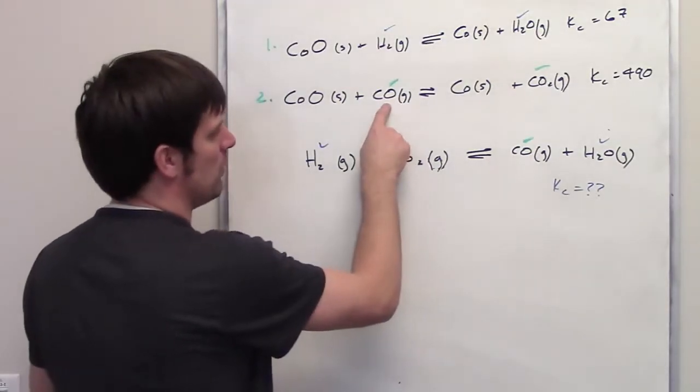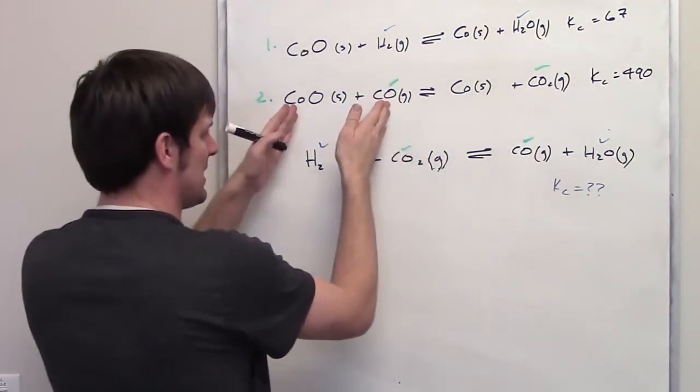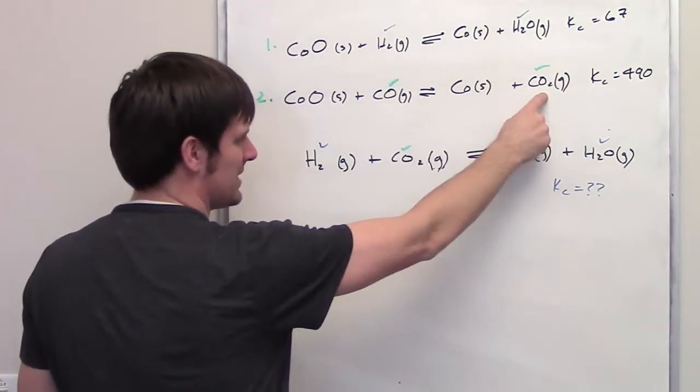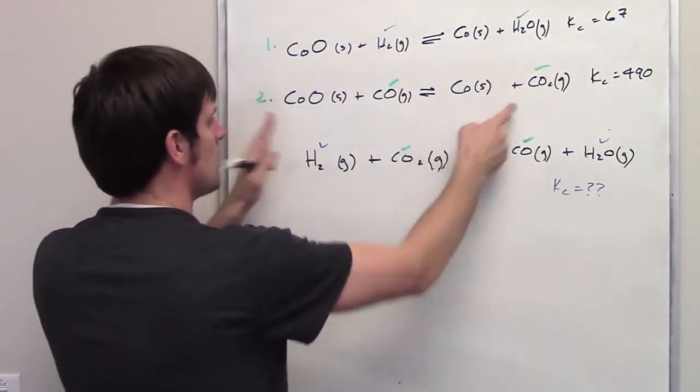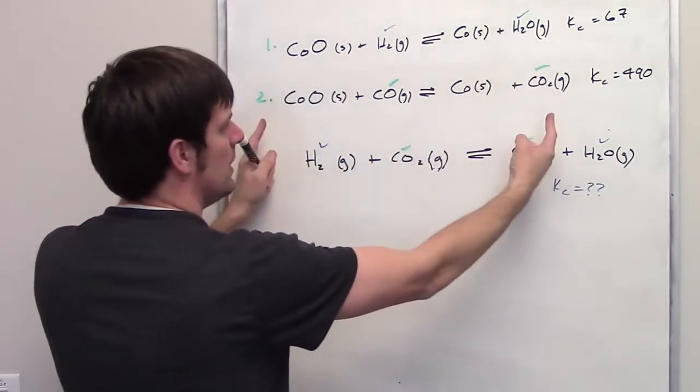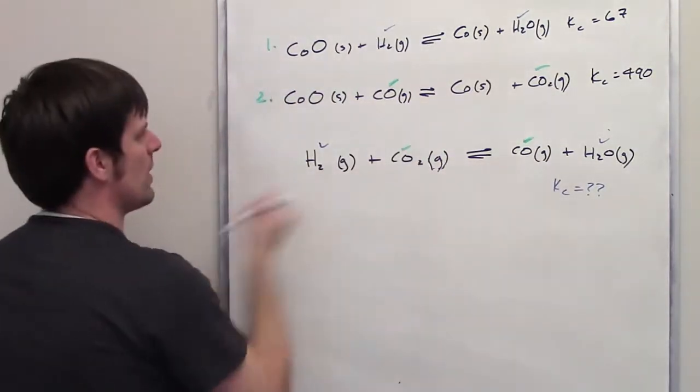Well, yeah, obviously I can see that carbon monoxide is on the left side of the equation here. It's on the right side of the equation down here. And this thing's on the right side of the equation. It's on the left side of the equation down here. So what I'm going to have to do is take this equation and reverse it. So I'll go ahead and do that right now.